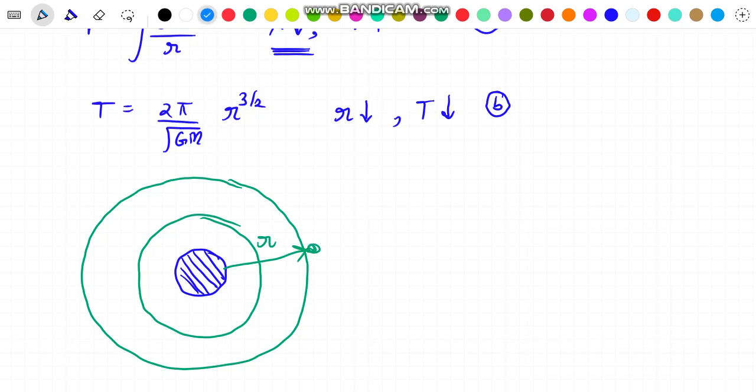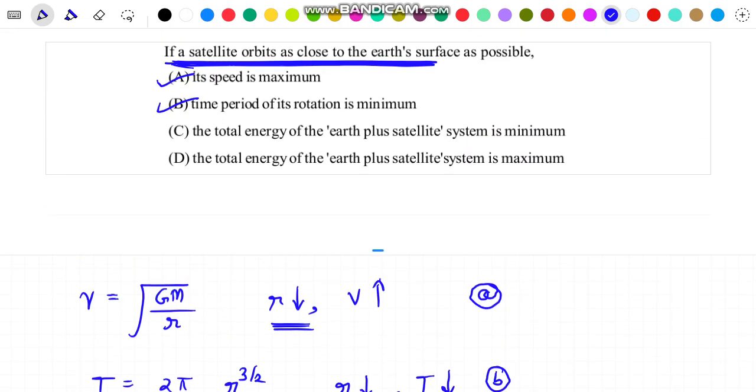So for this minimum possible radius, this energy will be highly negative, or the maximum possible negative value. Or I should say the magnitude of this energy will be maximum. But since this energy is negative, considering the sign, the total energy of the Earth plus satellite system is minimum at this particular point. That is, option C is also correct.